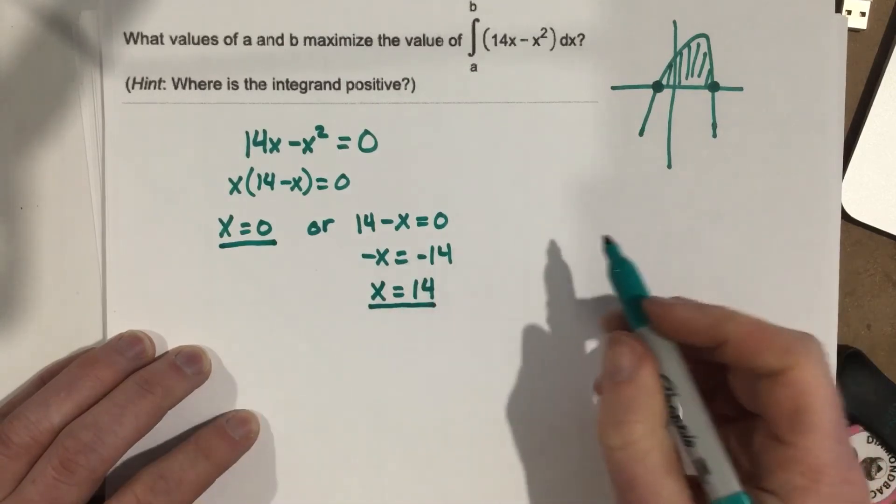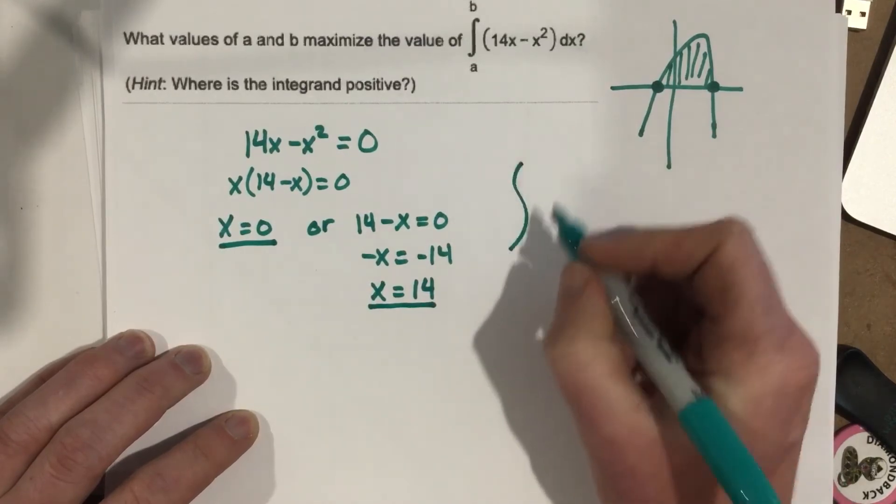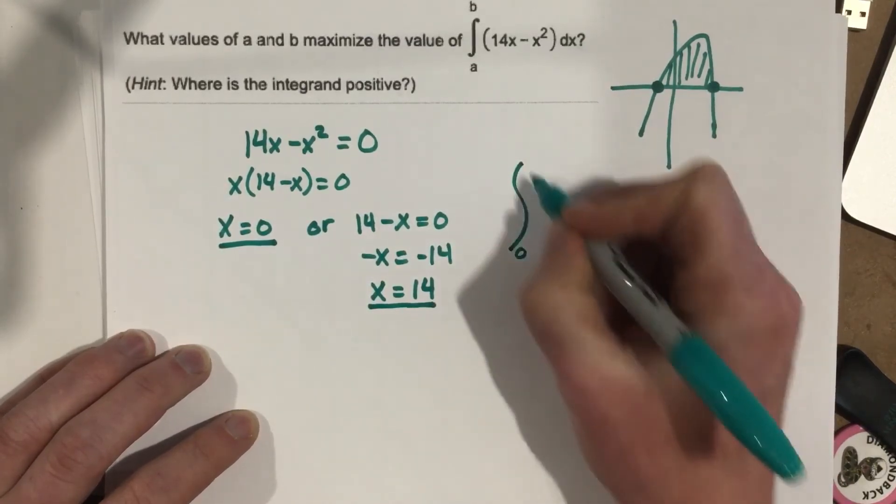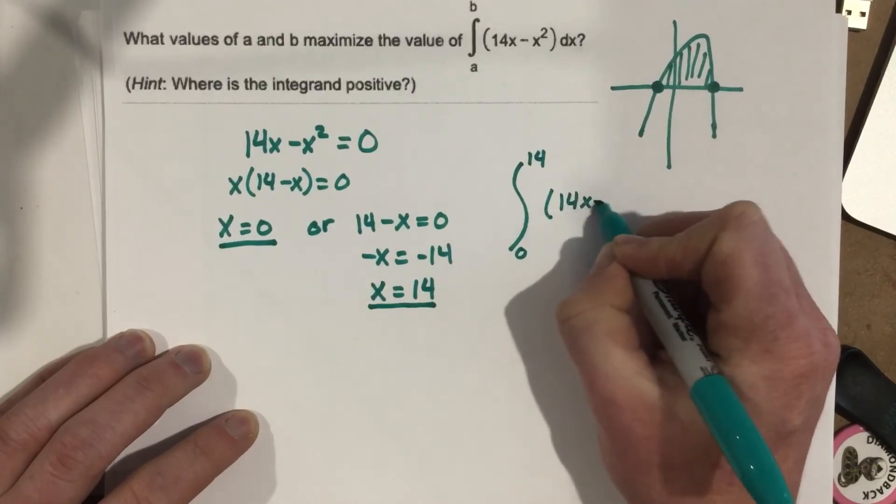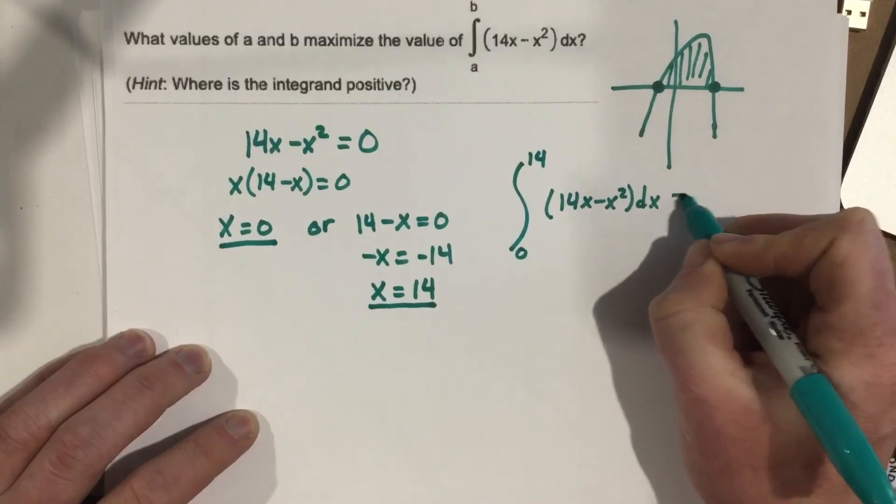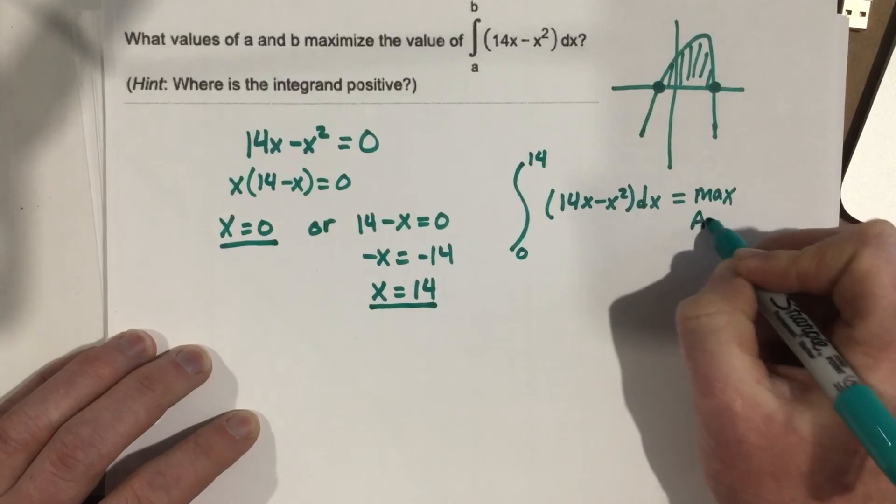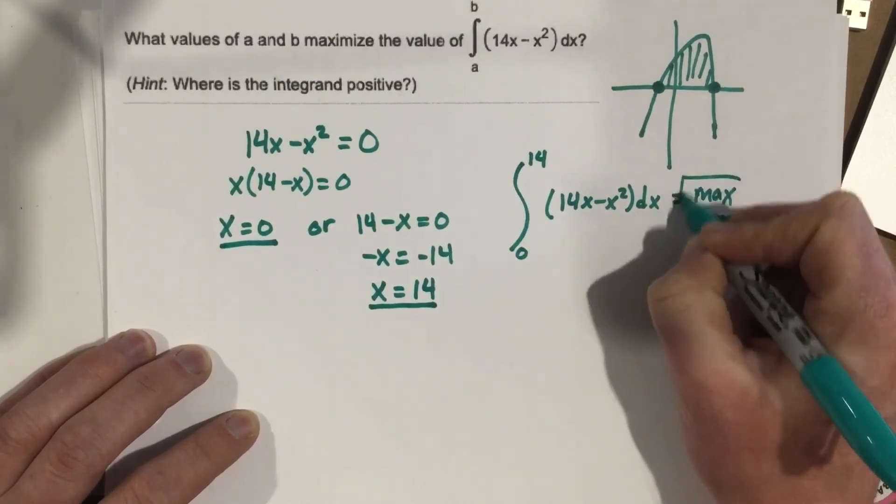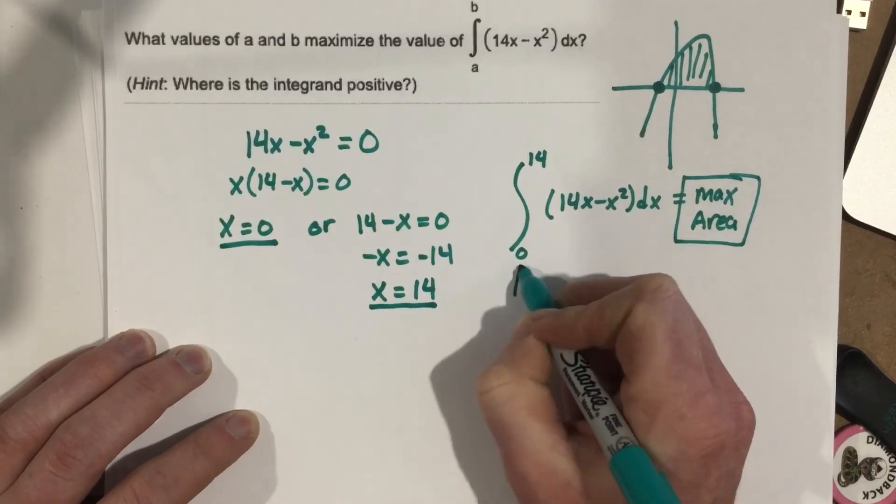So my integral, the values of a and b that I need to integrate, if I integrate from 0 to 14 of 14x minus x squared dx, that's going to equal the max area. Okay? So these are the solutions.